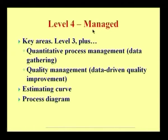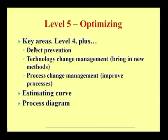Level 4, Managed, is Level 3 plus key aspects required for Level 4: quantitative process management where we try to gather data, and quality management — mostly data-driven quality improvement. Again, we estimate the curve and the process diagram. The process diagram is given higher concentration, and the curve needs to be estimated because the capability maturity model addresses process improvement. Level 5, Optimizing, is Level 4 plus defect prevention, technology change management, process change management, and estimation of the same curve and process diagram.